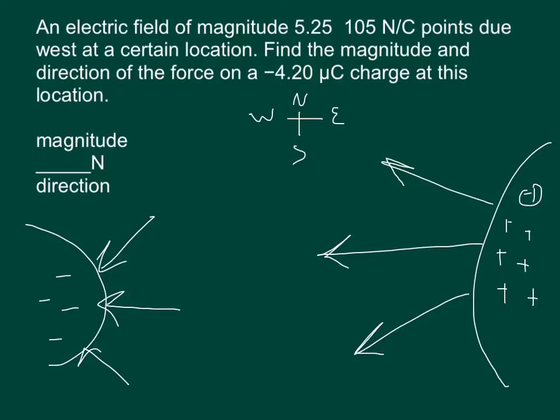In either case we can clearly see that if we put a negative charge here, it's going to be pushed to the east. And if a negative charge is put in this field it will be pulled to the east.